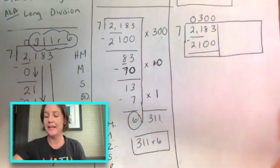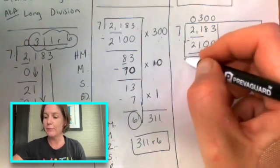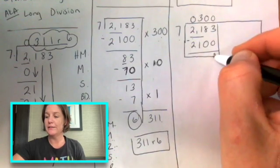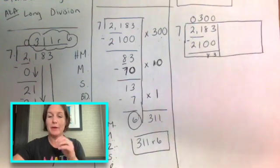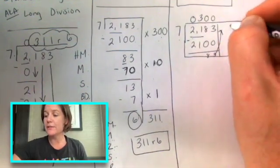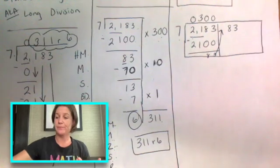And now we subtract and I should have made this box a little bit bigger. Sorry that I did not. We subtract and we get three and eight. And what we do is we take this 83 and we bring it on up to the top and repeat it now.